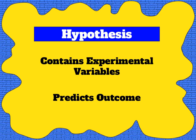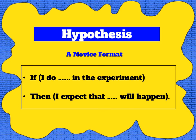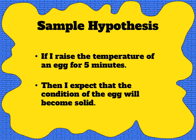If the question is testable it will be easy to write a hypothesis, which is the next step. The hypothesis tells us something about the variable the scientist wants to test and allows the scientist to use her expertise to predict the outcome. Because we are new at this we're going to use the if-then structure: 'If I do [X] in the experiment then I expect that [Y] will happen.' For example: if I raise the temperature of an egg for five minutes then I expect that the condition of the egg will become solid.